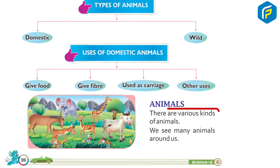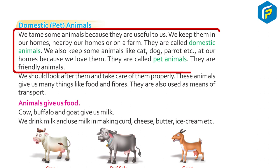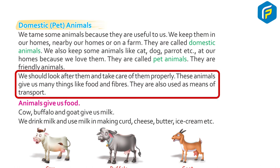There are various kinds of animals. We see many animals around us. We tame some animals because they are useful to us. We keep them in our homes, nearby our homes, or on a farm — they are called domestic animals. We also keep some animals like cat, dog, and parrot at our homes because we love them. They are called pet animals. They are friendly animals and we should look after them and take care of them properly.